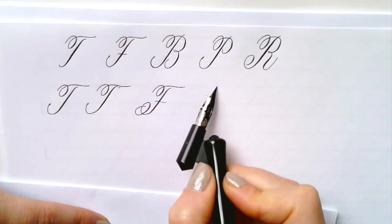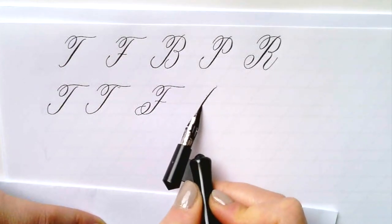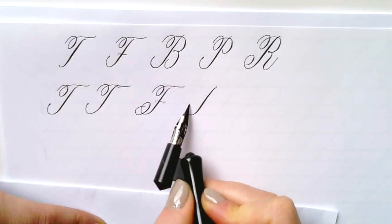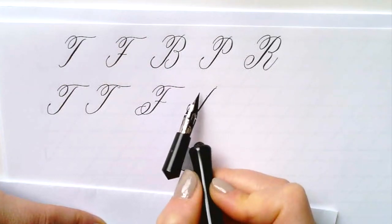And then the cross stroke is also a little wave, sits at the waistline, and remember all cross strokes are light. We never want two thick strokes to cross.